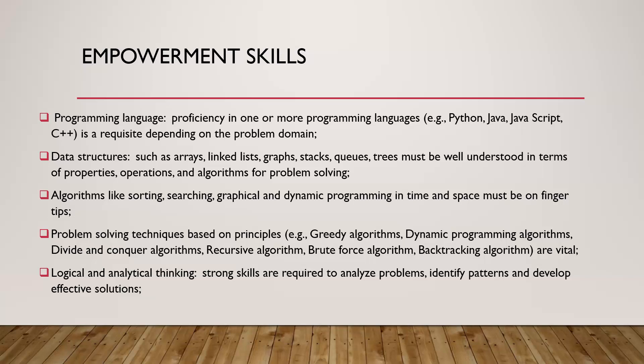Just as a parent trains a child to grow up doing certain tasks, we are also learning to train technology — whether a mobile phone or a computer — to undertake tasks and solve problems. We must use a language that the machine can understand. Language is a prerequisite skill for empowerment in efficient and effective coding. You also need familiarity with data structures such as arrays, linked lists, graphs, stacks, and trees — understood in terms of their properties, operations, and algorithms for problem solving. You must also have skills on algorithms like sorting, searching, graphical and dynamic programming in time and space.